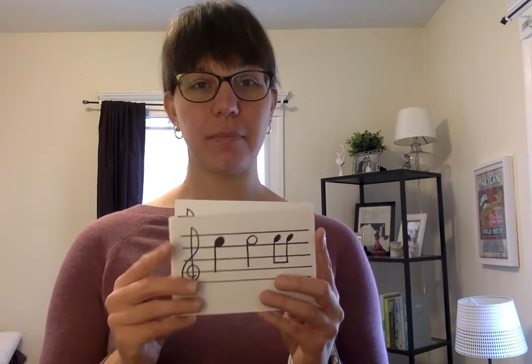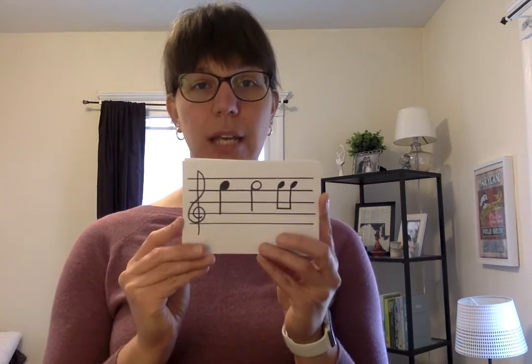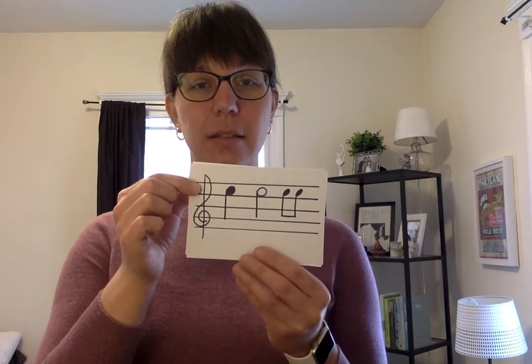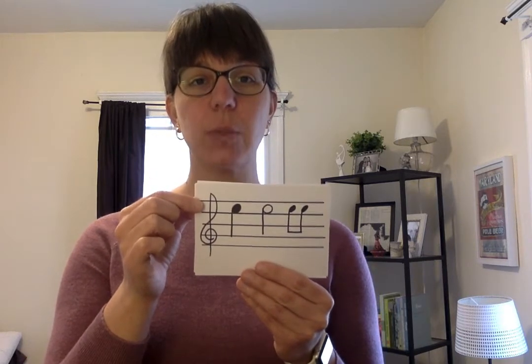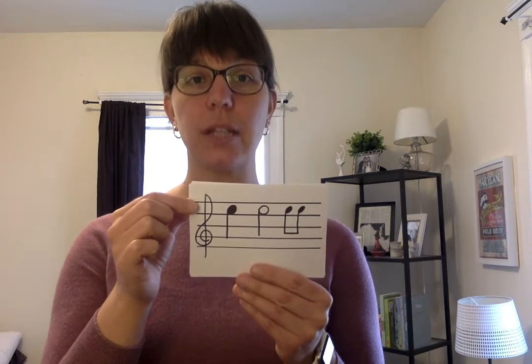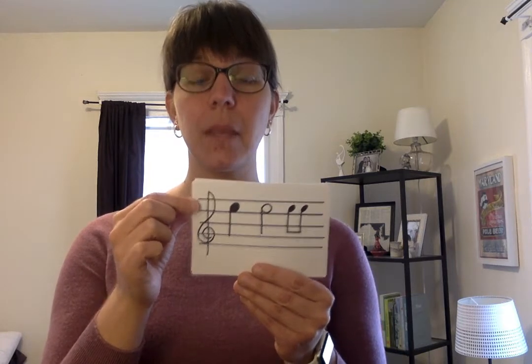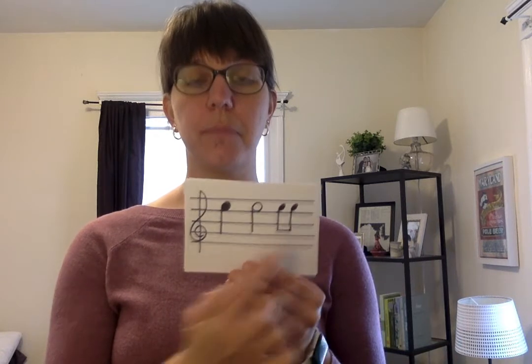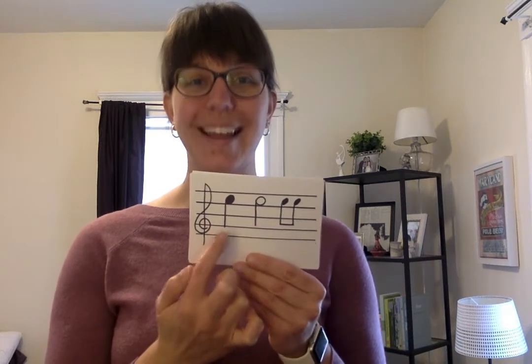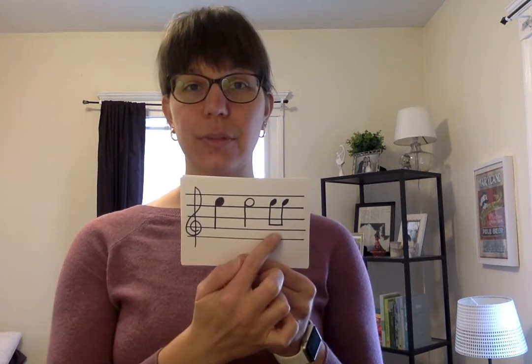Our highest string on the violin is the E string, and the E string is up in the top space. So any time you see a note in the top space, you know that it's open E. I've written it here in several different rhythms — we have a quarter note, a half note, and eighth notes.